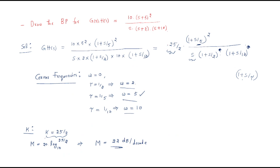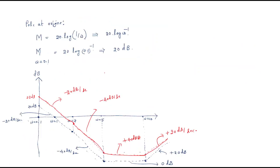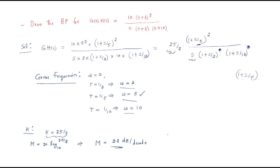This is a very lengthy problem. First modify the transfer function into standard form, then recognize the corner frequencies: ω = 0.1, ω = 1, ω = 2, ω = 5, ω = 10. Based on this you can continue the problem. I hope all of you understand this session. Thank you.